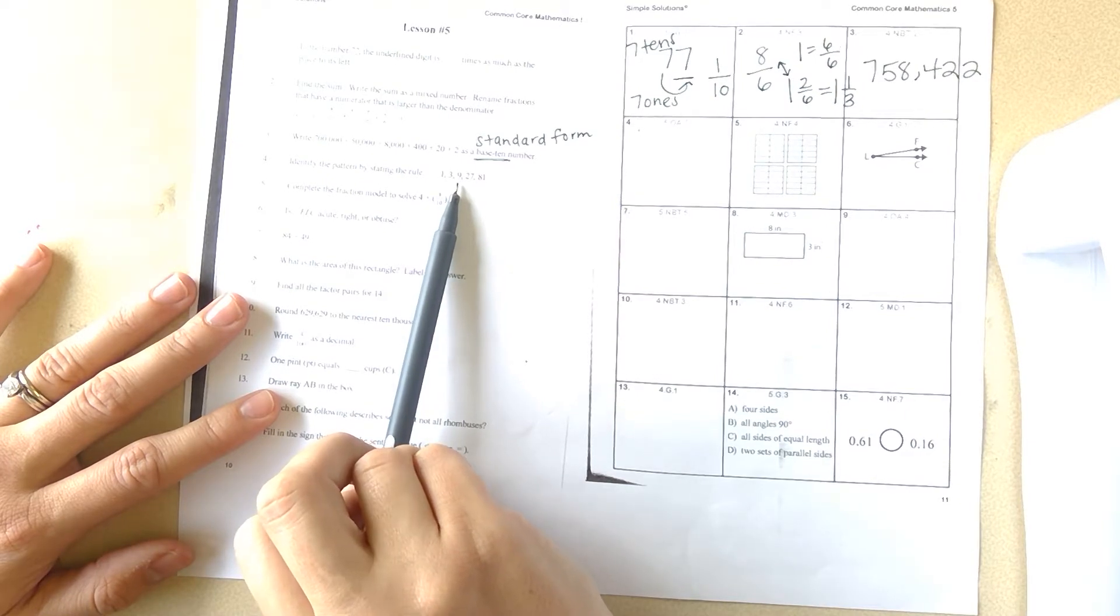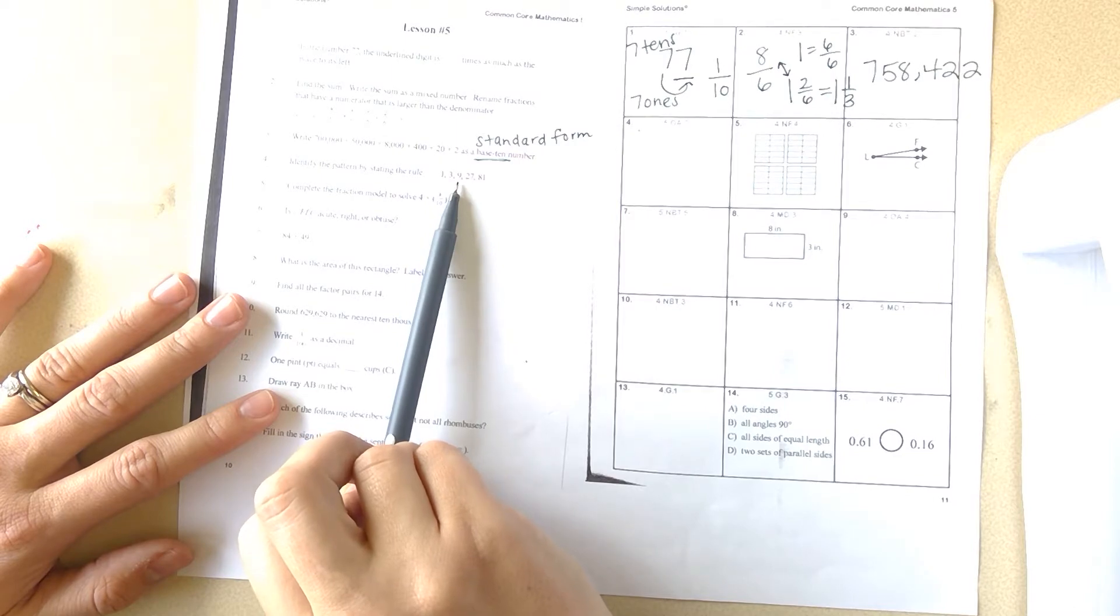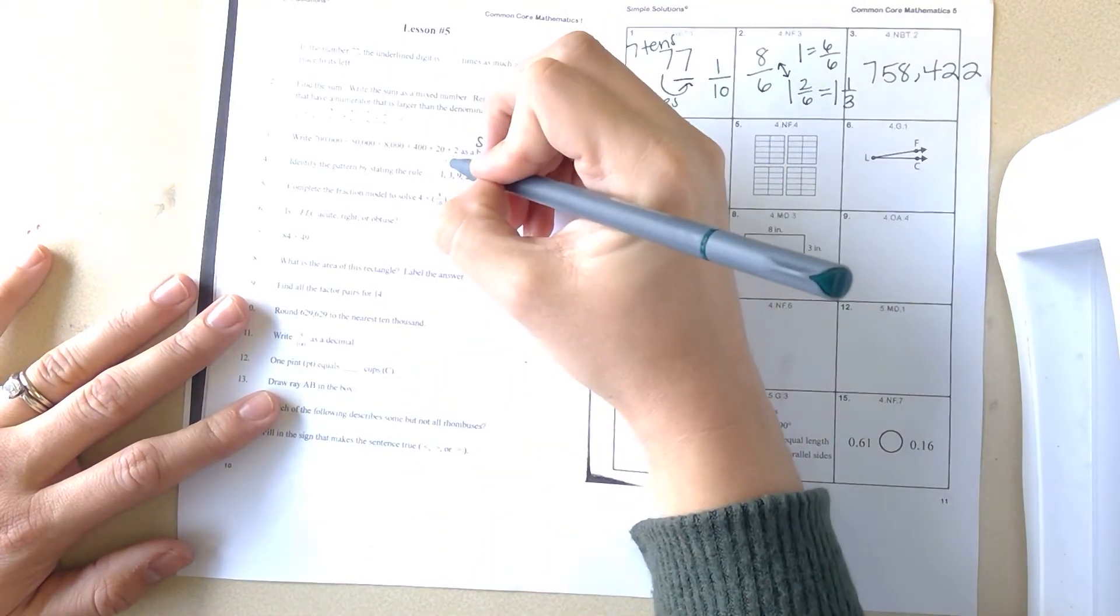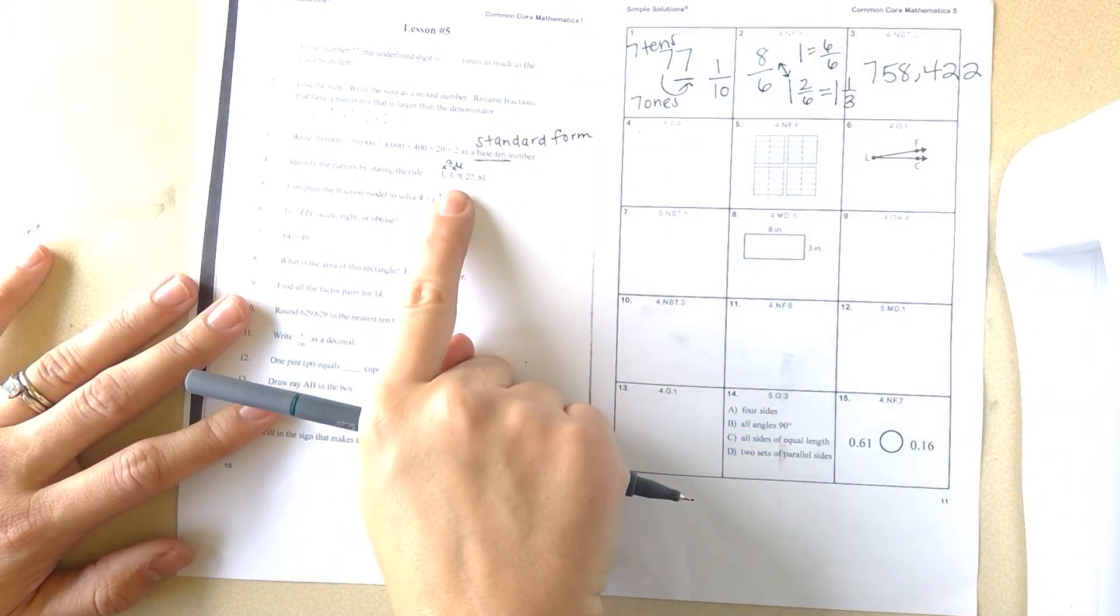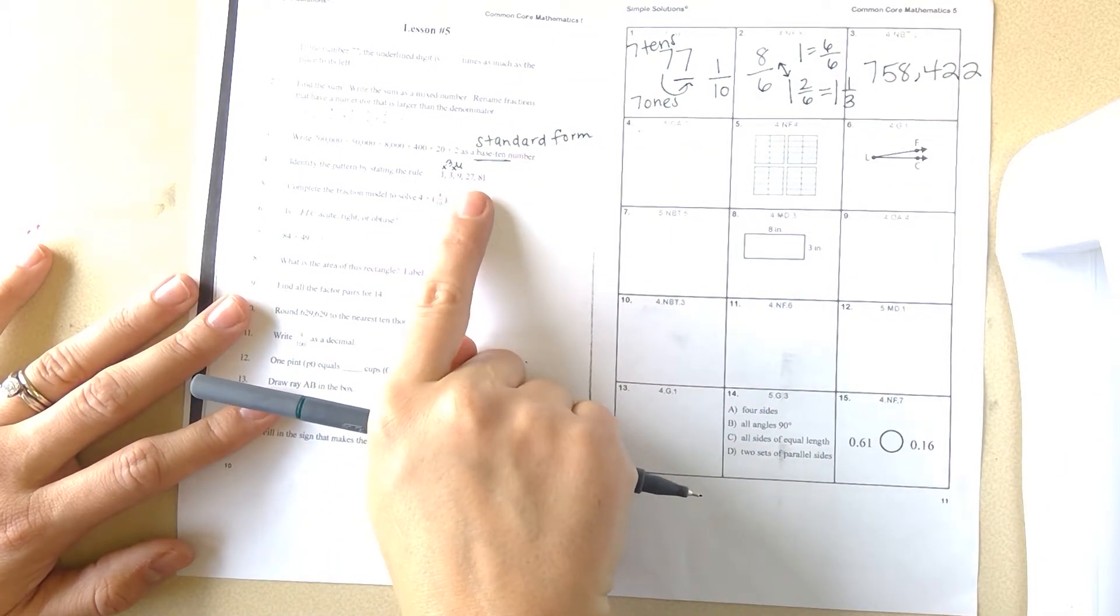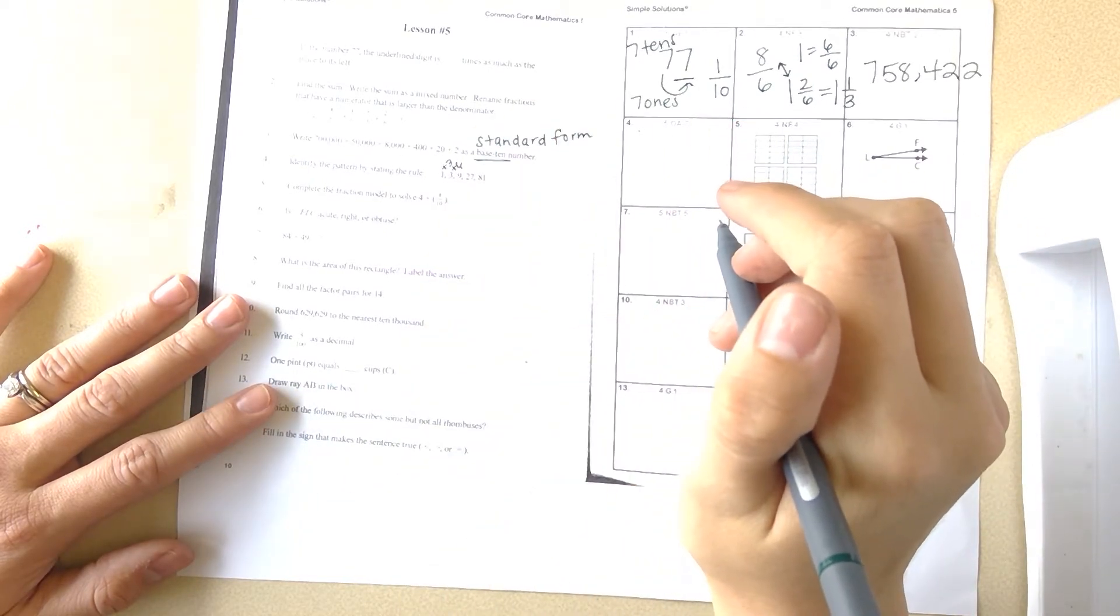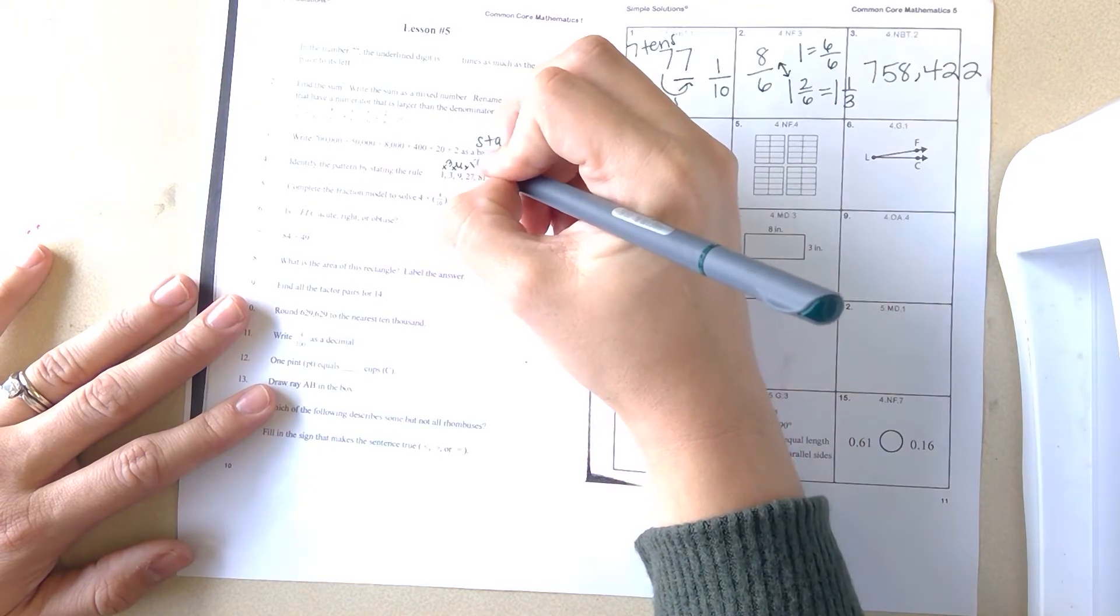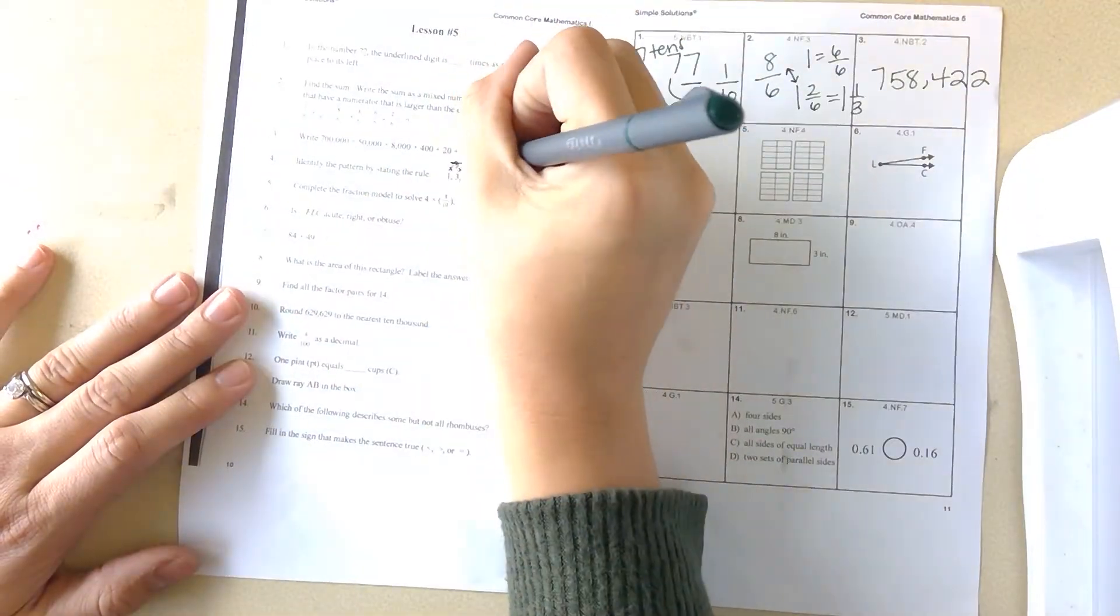That would be adding 6. Would that be the same for this? That would be adding 3, that would be adding 6. Then 9, what would I add to get to 27? That would be 18. So there's no pattern in the addition. Let's look at multiplication.